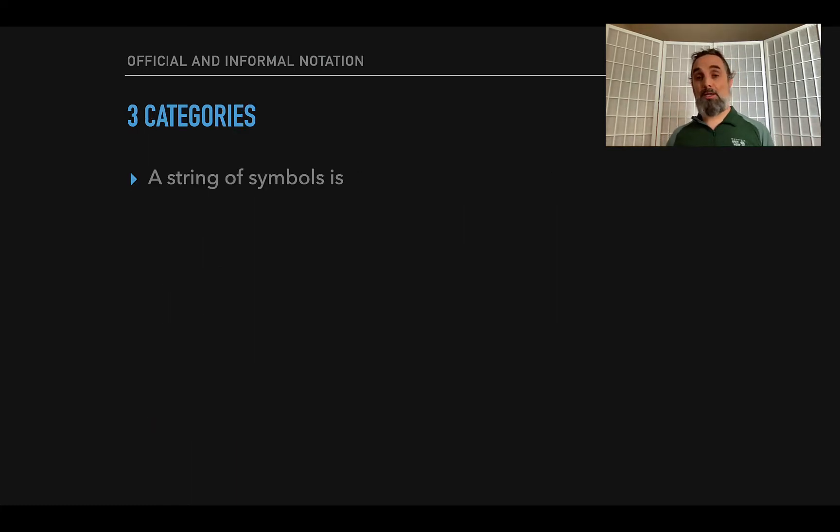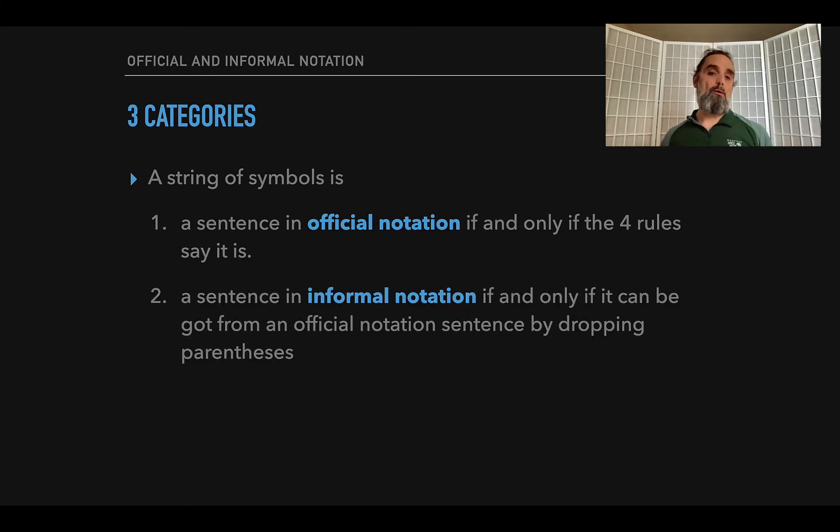So we can say a string of symbols might be one of three things. It might be a sentence in official notation, and when is it that? If and only if it's so according to those four rules. A string is a sentence in informal notation if and only if you could produce a string by building up a sentence according to official notation and then dropping the final external set of parentheses if that sentence had external parentheses. Or the string might just be what we call not well formed if it's anything else.